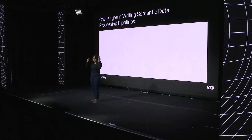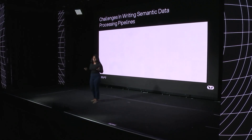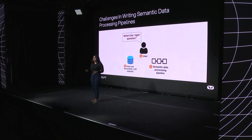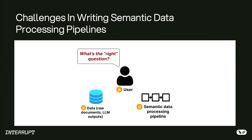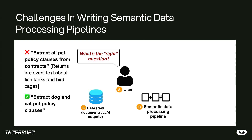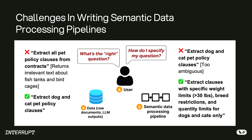At UC Berkeley, we put on our research and HCI hats and studied how people write these data processing pipelines. The very first thing we observed is that people did not even know what the right question is. In our real estate example, someone might think they want to extract all pet policy clauses, and only after looking at the documents realize they only wanted dog and cat pet policy clauses. Then, when they feel they know the right question, they need to specify it precisely. LLMs require very well-specified, clear, unambiguous prompts — and things humans think are unambiguous are actually pretty ambiguous. Just saying 'dog and cat policy clauses' doesn't tell the LLM much; you may need to specify weight limits, breed restrictions, quantity limits, and so forth.